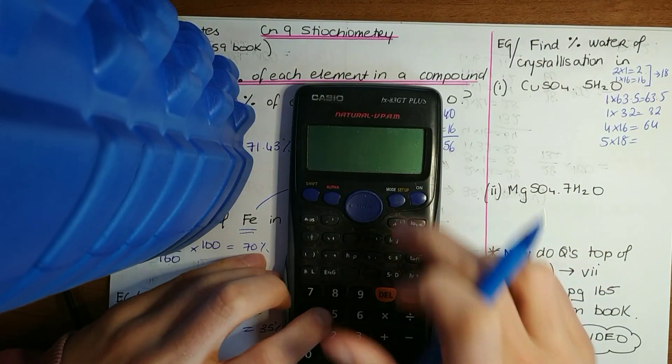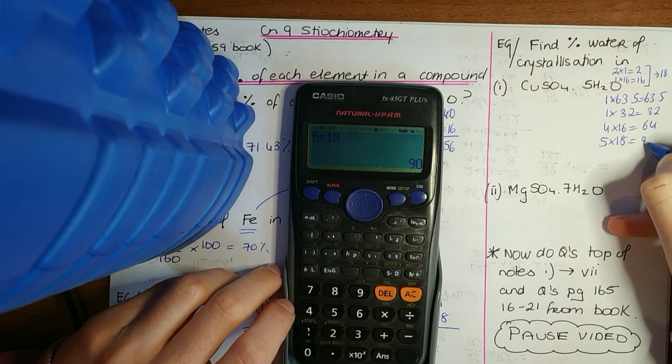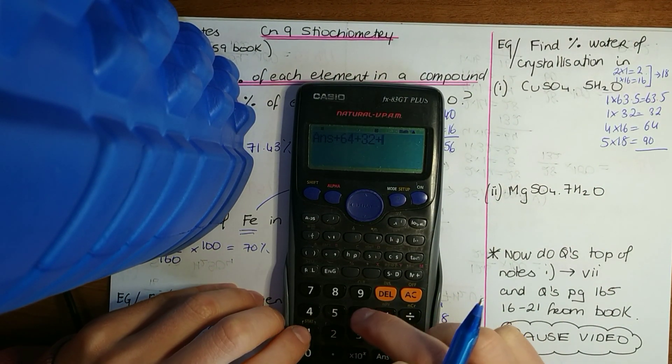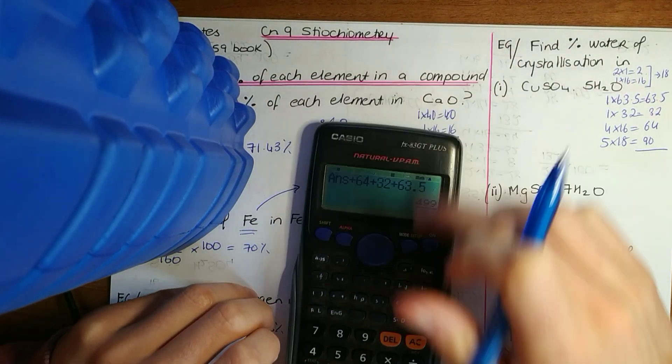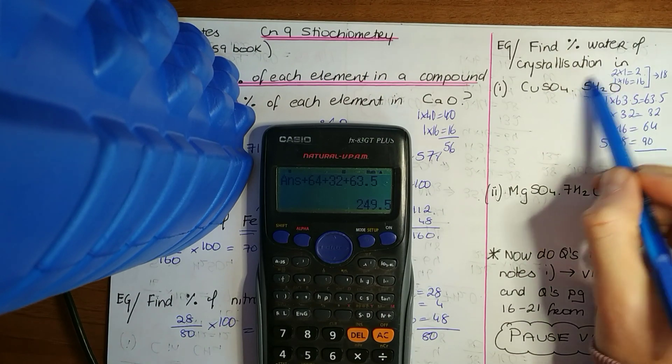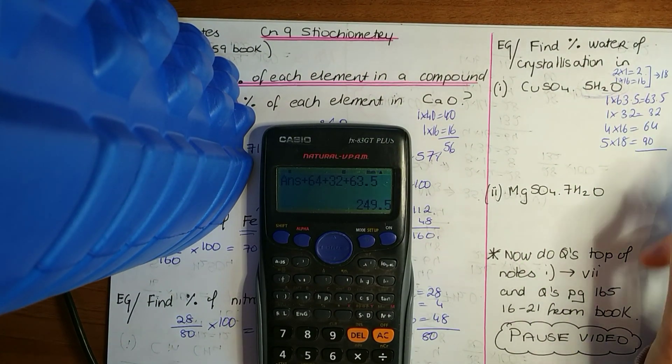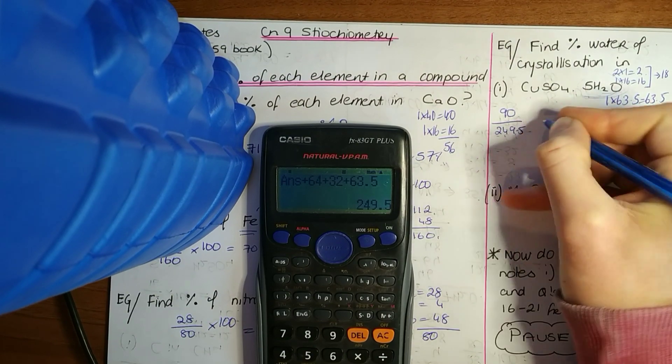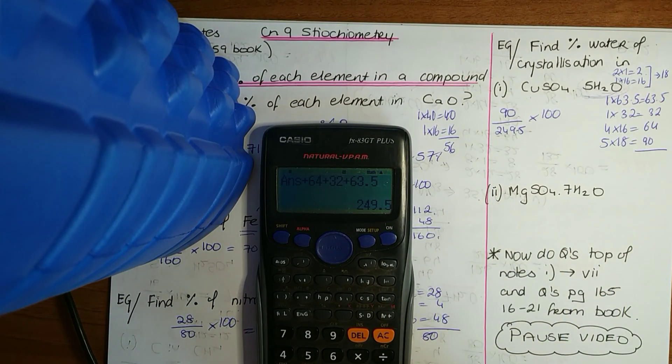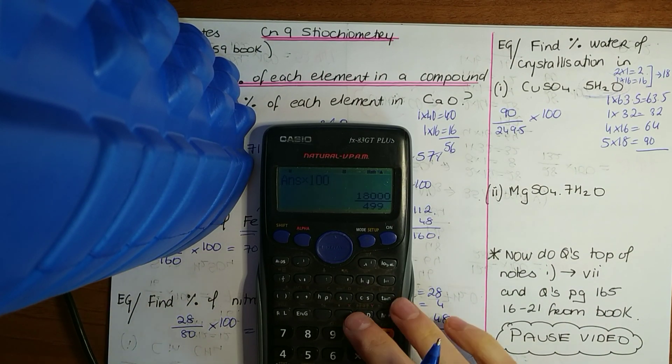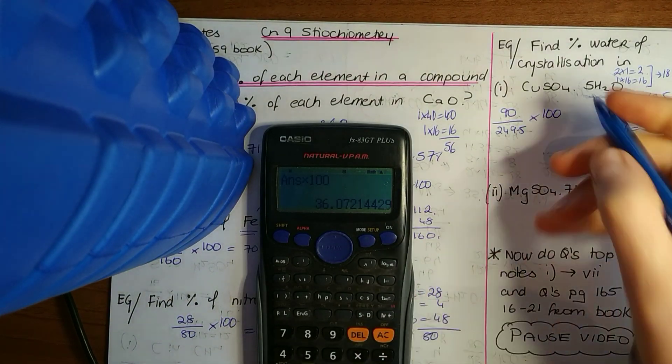Tally that up for your total relative molecular mass and you get 249.5. And here it says the percentage of water of crystallization - how much water is in that? It's 90 over 249.5, and again to make it a percent, times it by 100: 36.07.